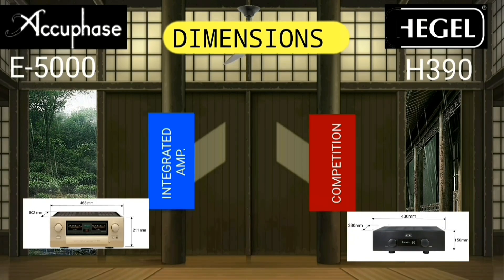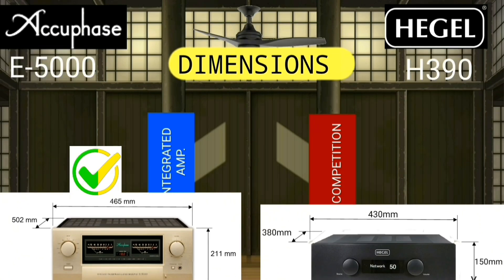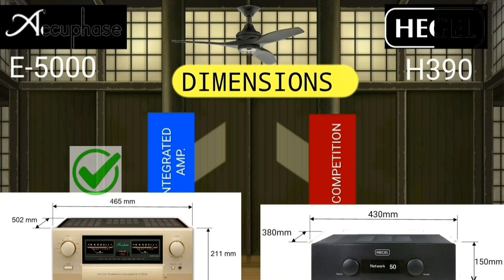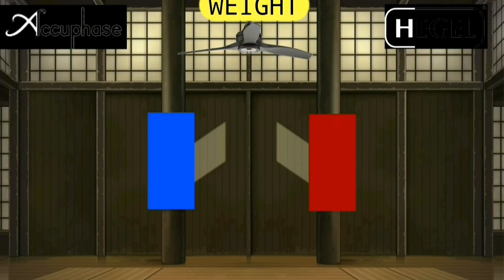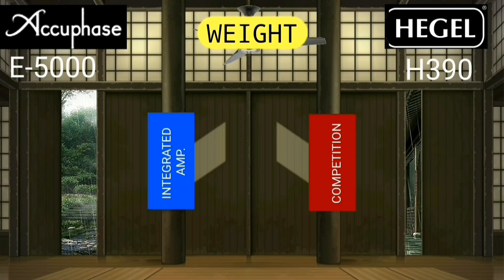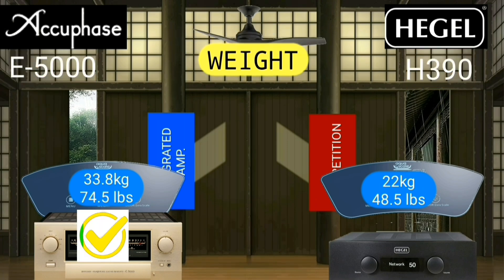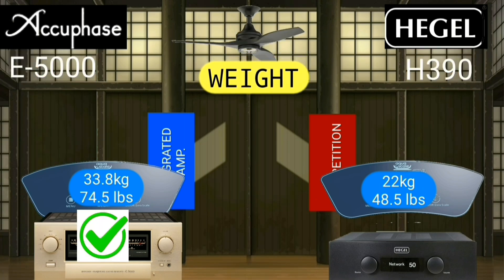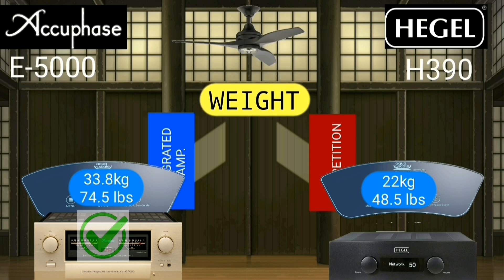The volume of the AQPACE E5000 integrated amplifier is two times greater than the Hegel H390. If you take the scales and weigh them both, you will find that the E5000 is 26 lbs heavier than the H390.